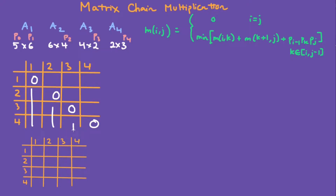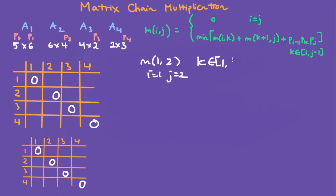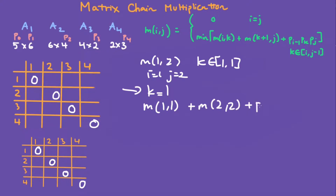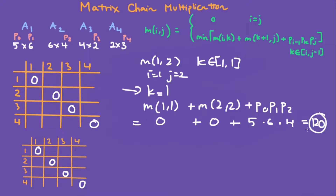So what is m[1,2]? Well, i is 1, j is 2, and k goes from 1 to 1. When k is 1, we have m[1,1] plus m[2,2] plus p0 * p1 * p2. m[1,1] is 0, m[2,2] is 0, so 0 plus 0 plus p0 is 5, times p1 is 6, times p2 is 4 — that gives you 120. The loop goes from 1 to 1 so we're finished. Fill in 120, and the chosen k is 1.